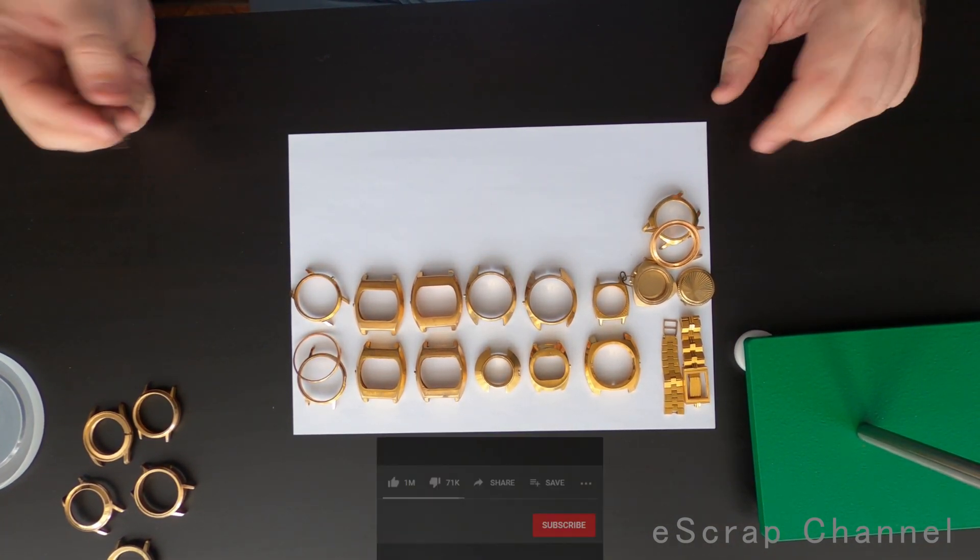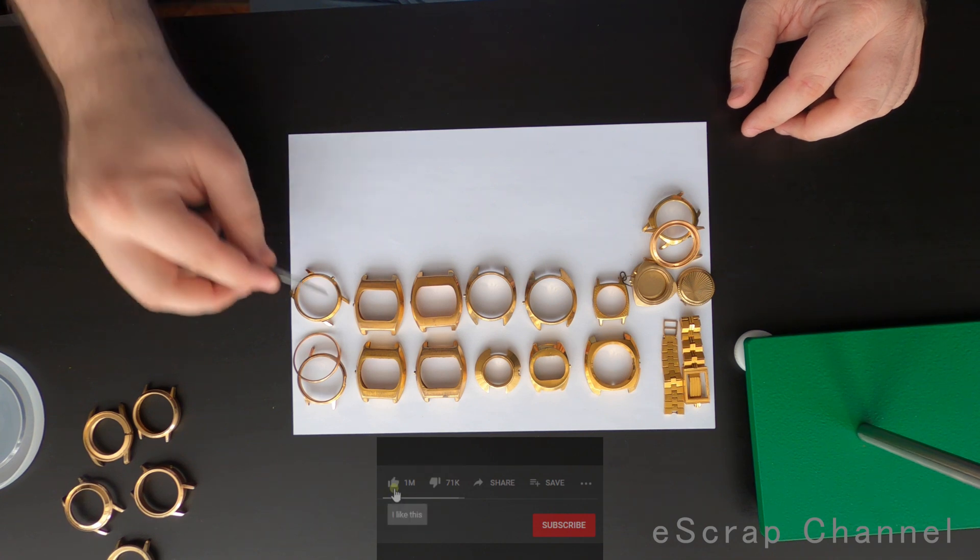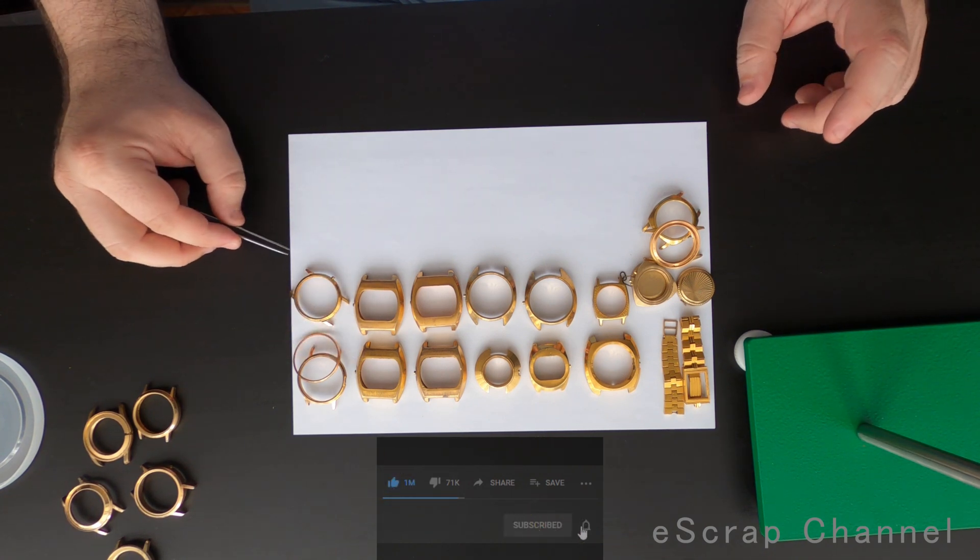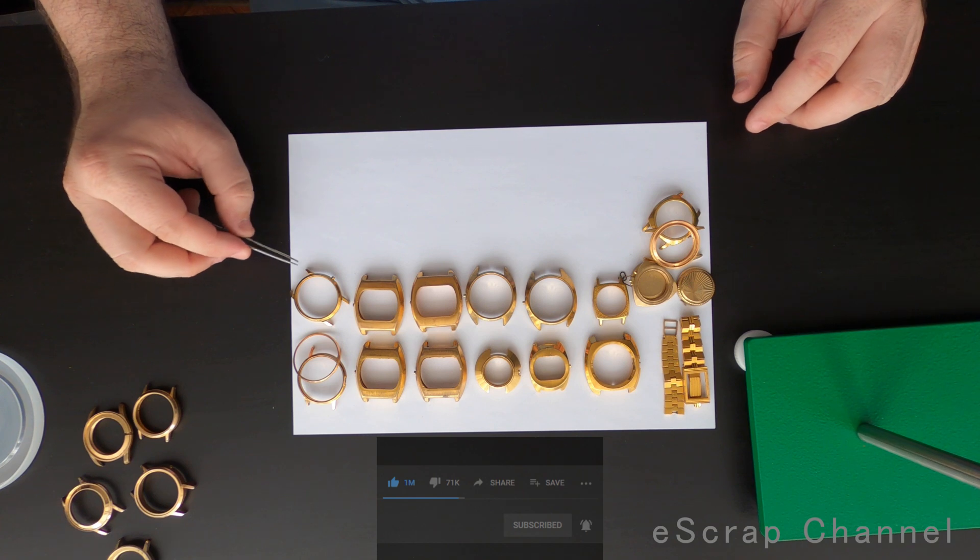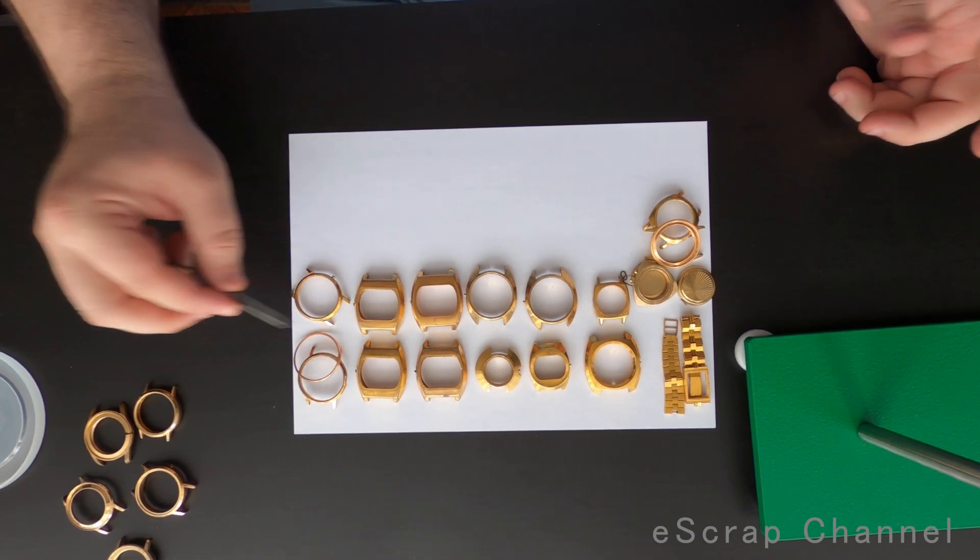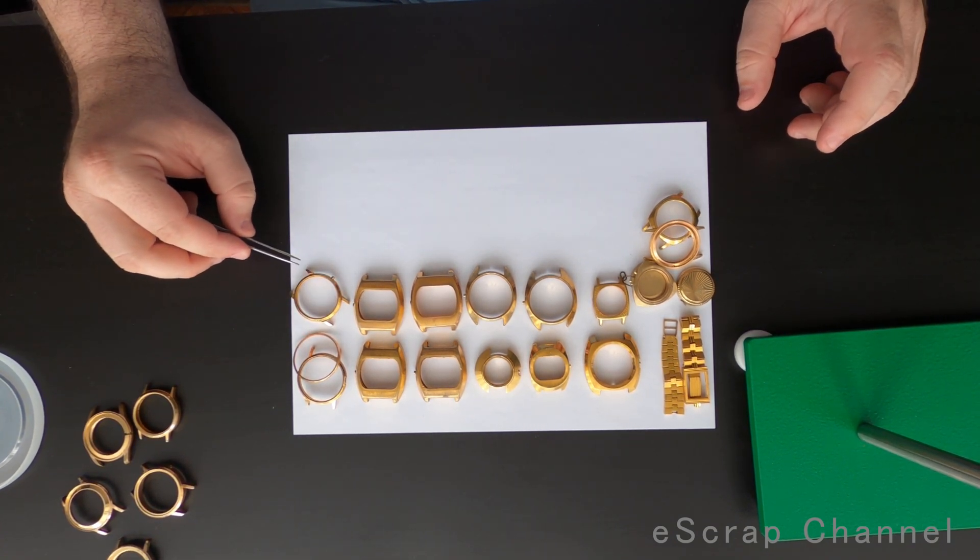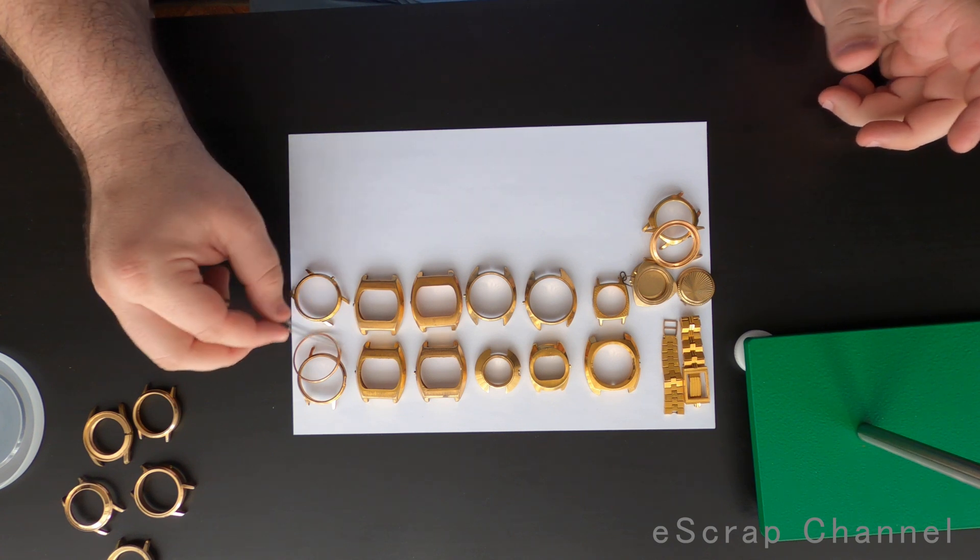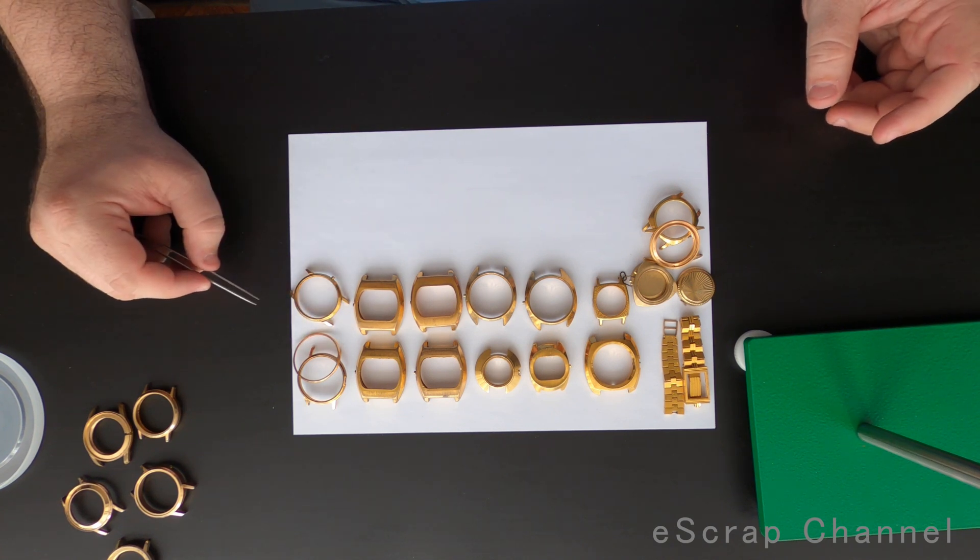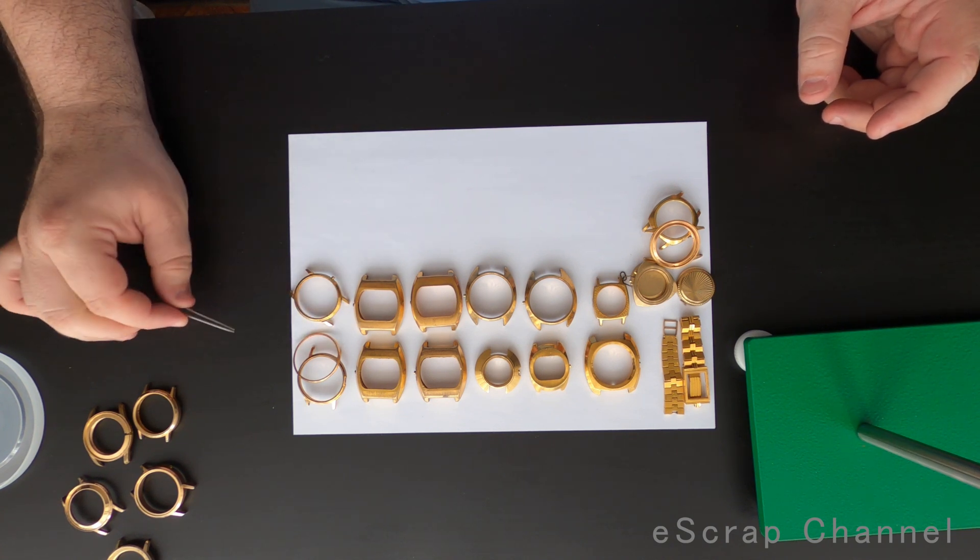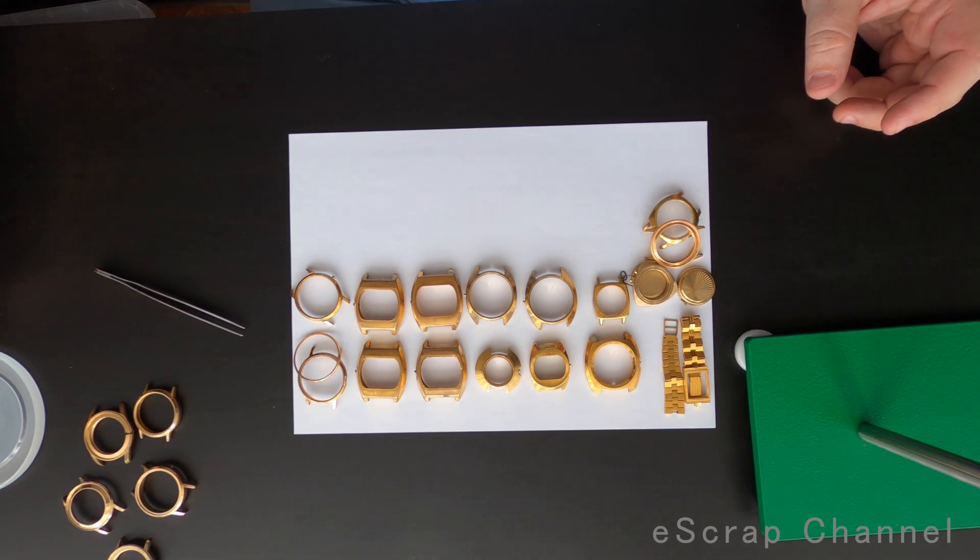As you can see, even if you have the same two cases, if this watch was worn for 10 years and this one for one year, you'll definitely have different amount of gold from the two cases. And always check these cases.